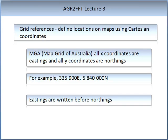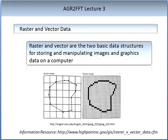Raster and vector are two basic data structures for storing and manipulating images and graphics data on a computer. Major GIS and CAD — Computer Aided Design — software packages are available and use these primarily based on one or two structures, either raster or vector based. Raster images come in the form of individual pixels, and each spatial location or resolution element has a pixel associated with it. The pixel value indicates an attribute such as a colour, elevation, or an ID number.